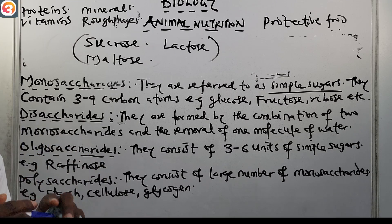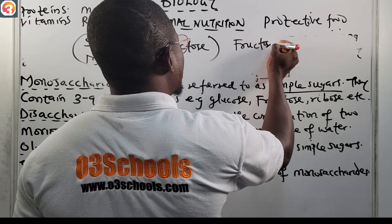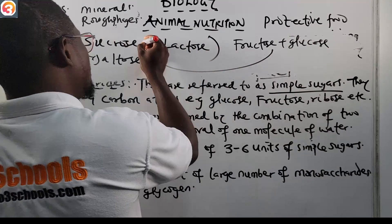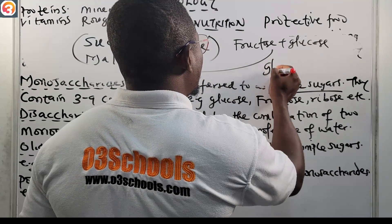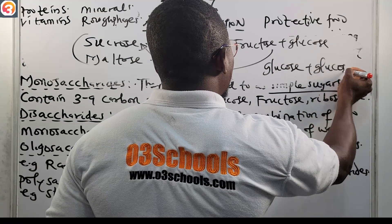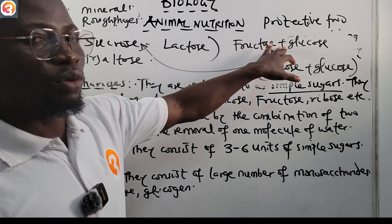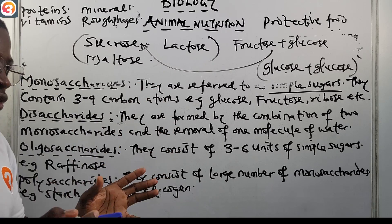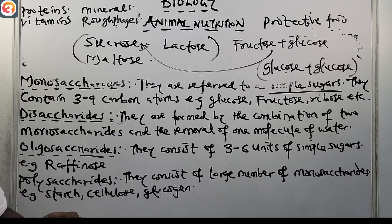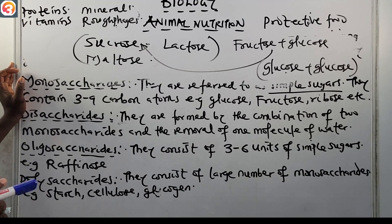To recap: sucrose is formed from fructose plus glucose. Maltose is formed from glucose plus glucose. Lactose is formed from glucose and galactose. They are all disaccharides with the general formula C12H22O11, formed by the combination of two monosaccharides and the removal of one molecule of water.